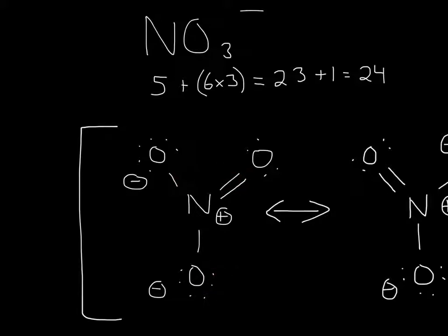If you have lone pairs and double bonds, you're usually going to convert them between each other and move it between the other single bonds. It'll make more sense if I show you.